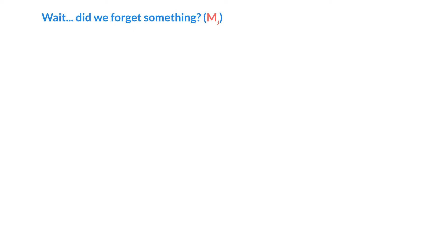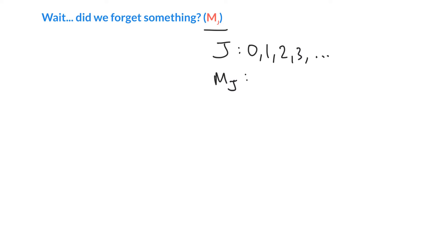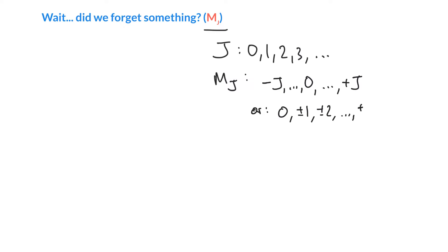We forgot the magnetic quantum number earlier. We've been talking about j, and we've said j can take values from 0 to infinity. There is another quantum number, mj, which tells us the z component of the angular momentum. It doesn't affect the energy unless you're in a magnetic field, but there are states described by both j and mj quantum numbers, so we have to take that into account. As a reminder, mj takes values from minus j to plus j in steps of 1 — or written out: 0, ±1, ±2, ..., ±j.